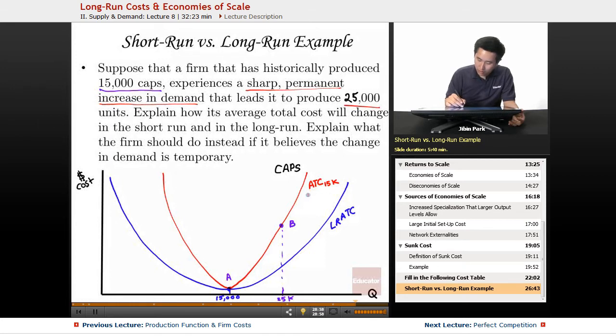They produce at point B here. So the ATC is going to be higher than it was at 15,000 because, remember, they were only equipped to sell 15,000. So in order to meet the demand, they produce more. They add it to the variable cost rather than use the fixed cost in the beginning. So at part B here, the ATC is going to be greater than the LRATC here.